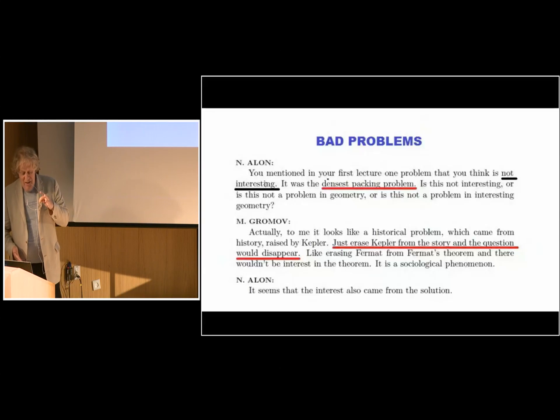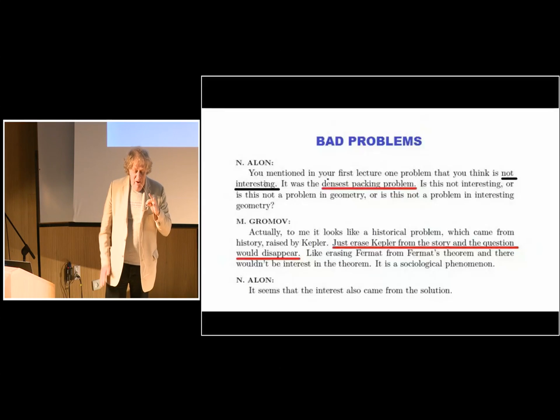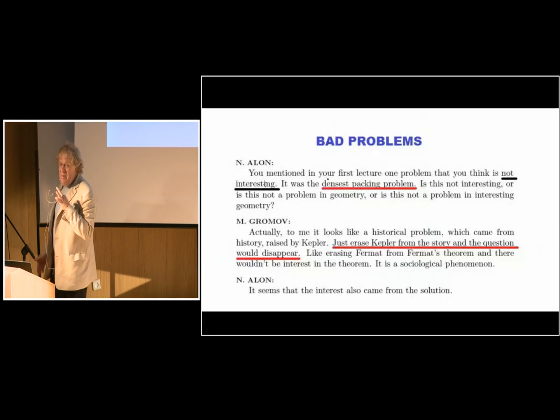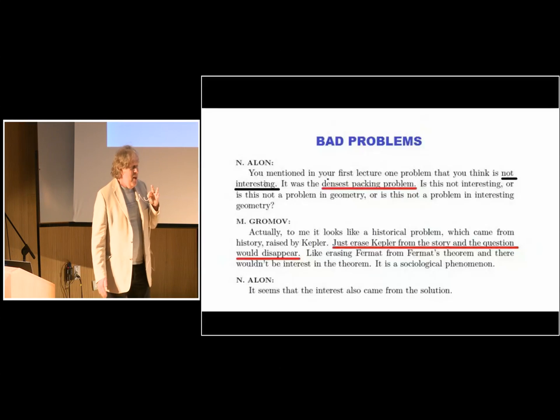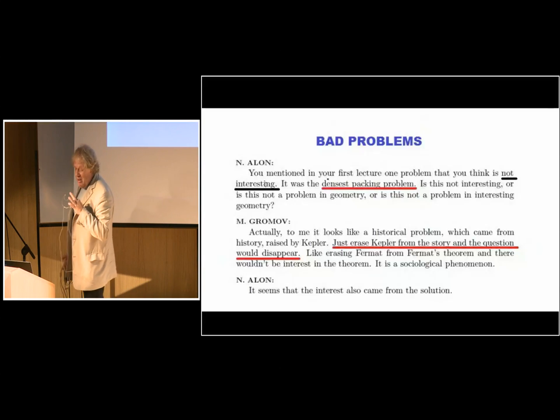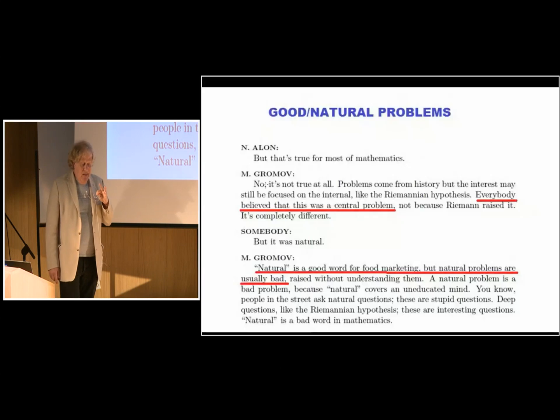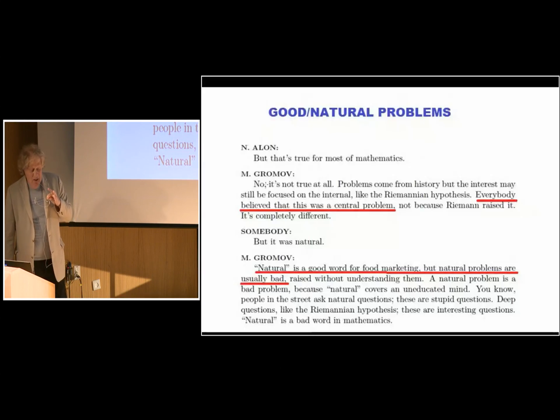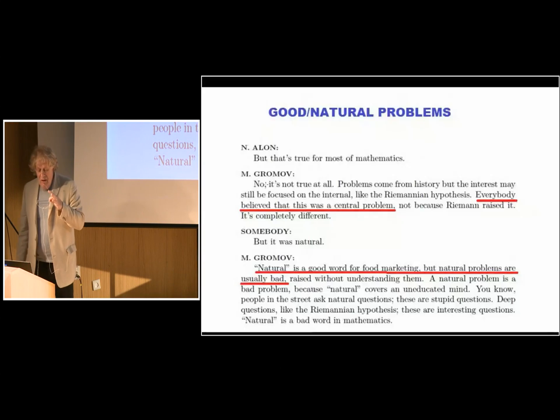And, well, Noga asked, with mathematical precision, whether he thinks that it is an uninteresting question, or it is not a geometric question, just not an interesting geometric question. And then Gromov answers that this is just a historical problem. If you erase Kepler's name from the problem, then the problem ceases to exist, and it is exactly the same as the case of Fermat's last theorem. If you remove Fermat from the picture, then there is no real valid question remaining there.